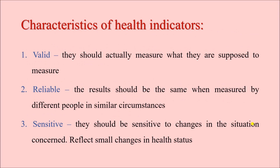Coming to the next part: characteristics of an ideal health indicator — a very commonly asked viva question that can also be part of a long question or a short note. The first characteristic is validity: the indicator should be able to measure what it is supposed to measure. For example, to know the situation of infant deaths in a population, the valid indicator is infant mortality rate. Using maternal mortality ratio instead would reflect maternal deaths, not infant deaths — so it would not be valid for assessing infant mortality.